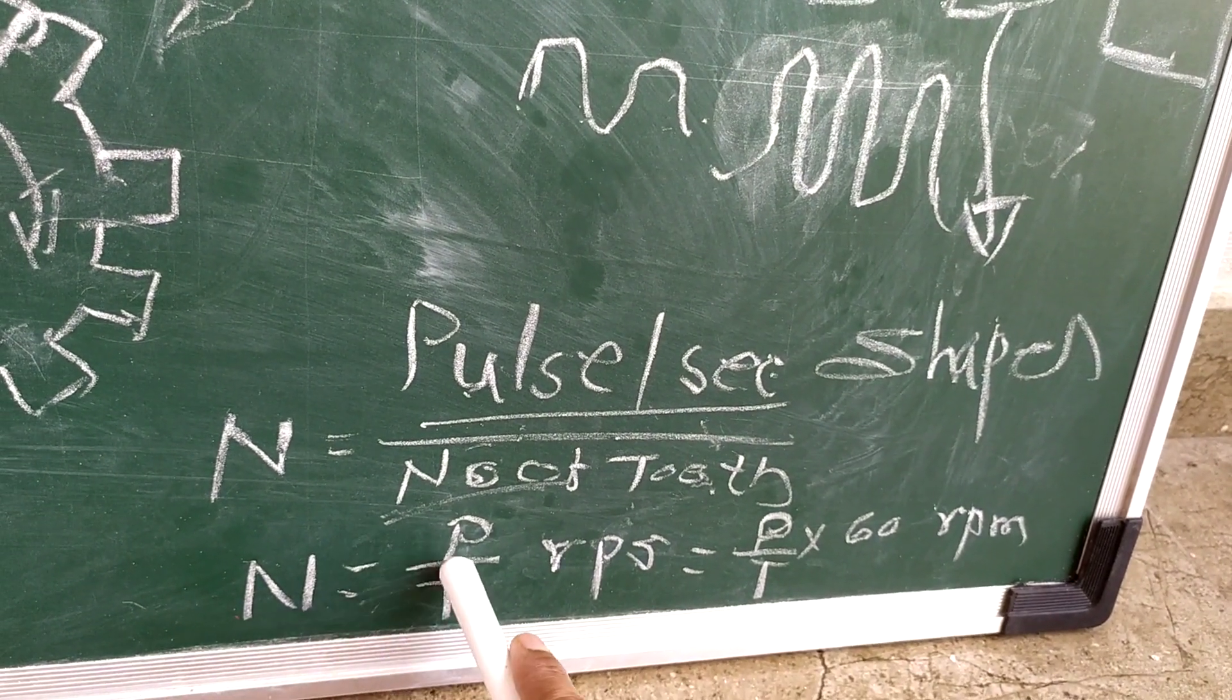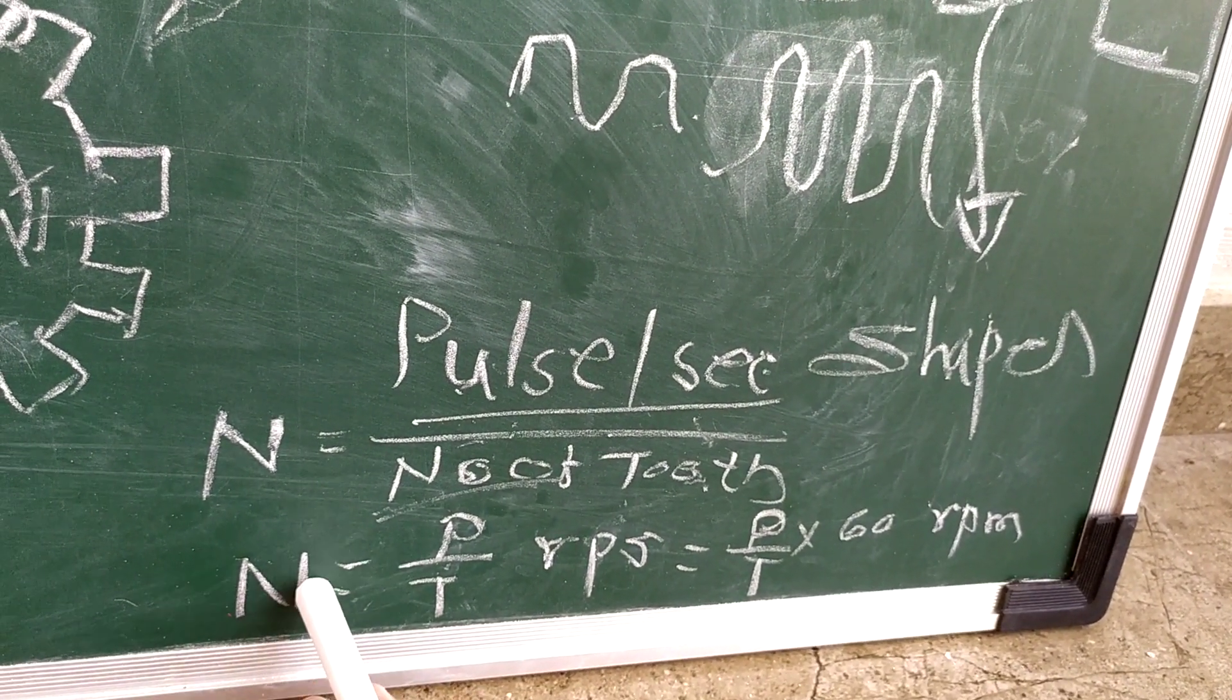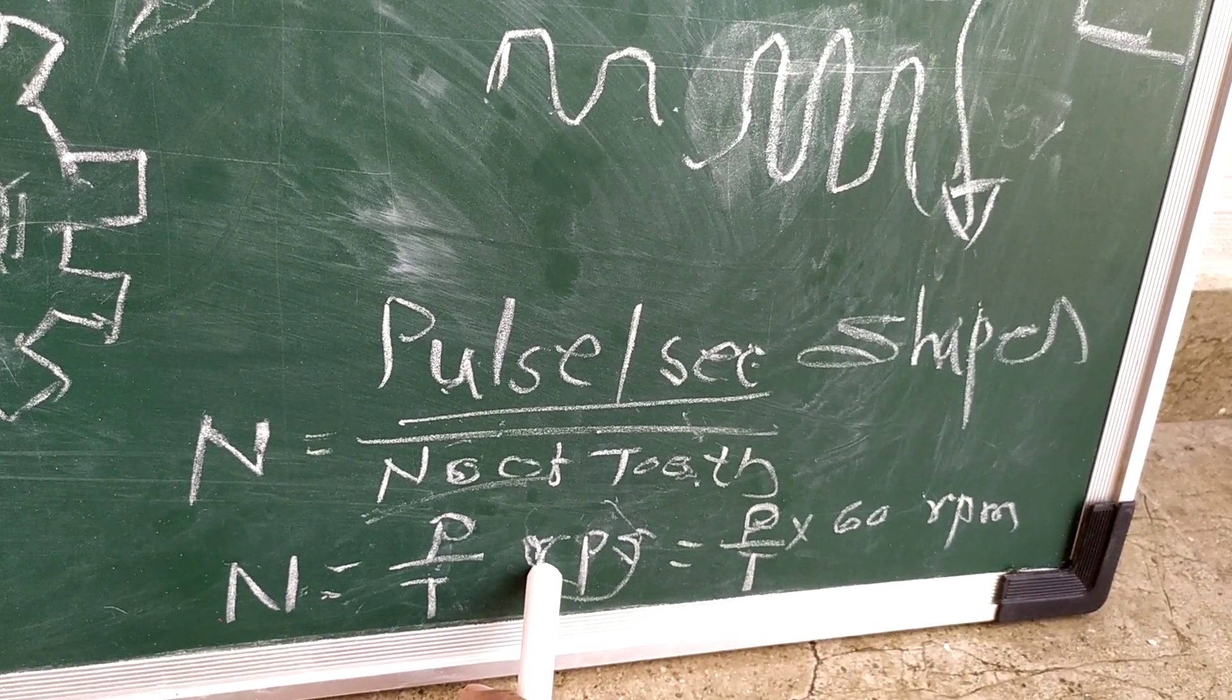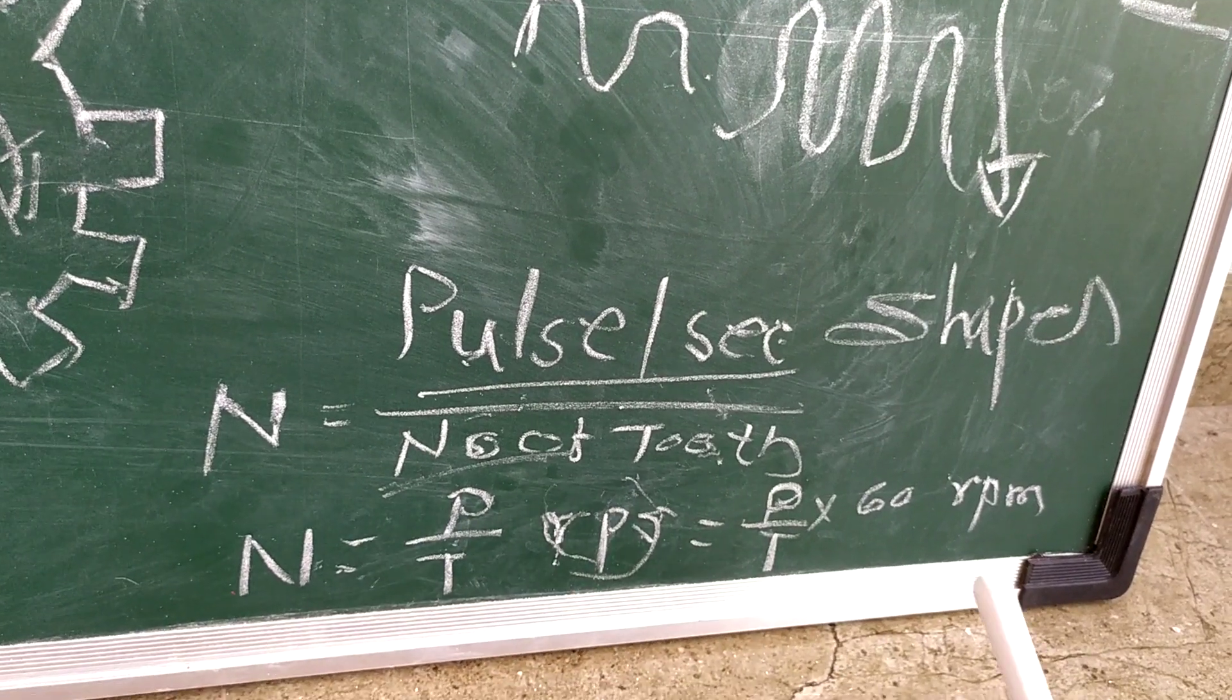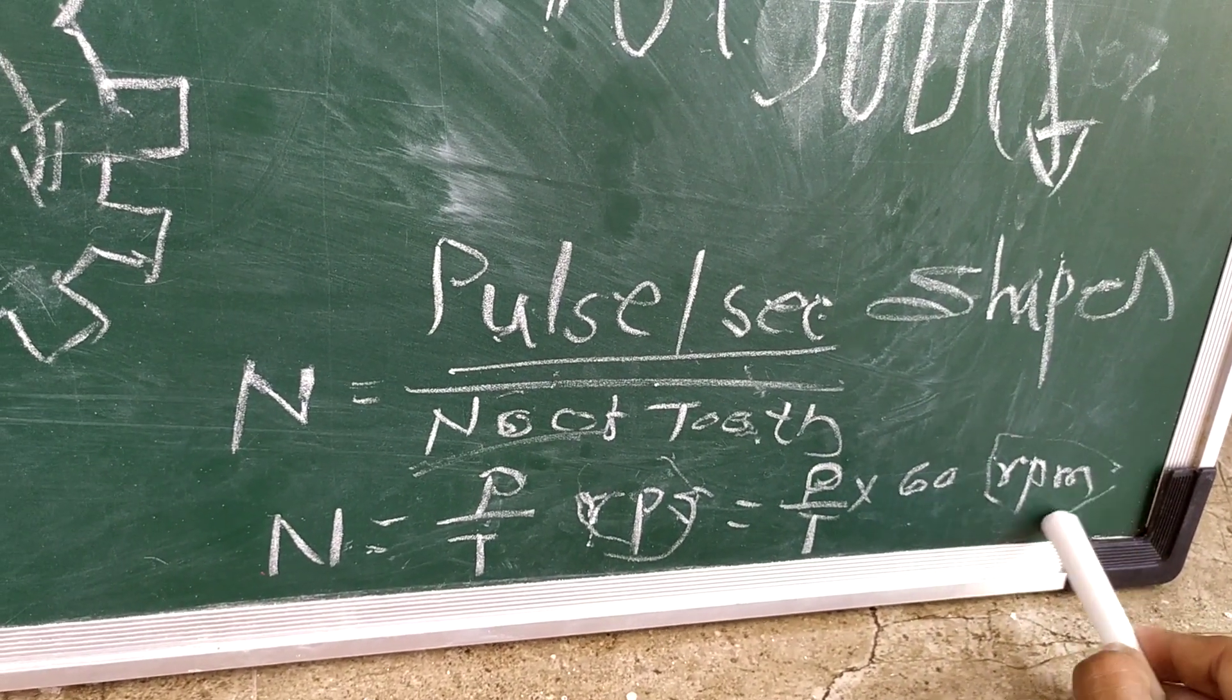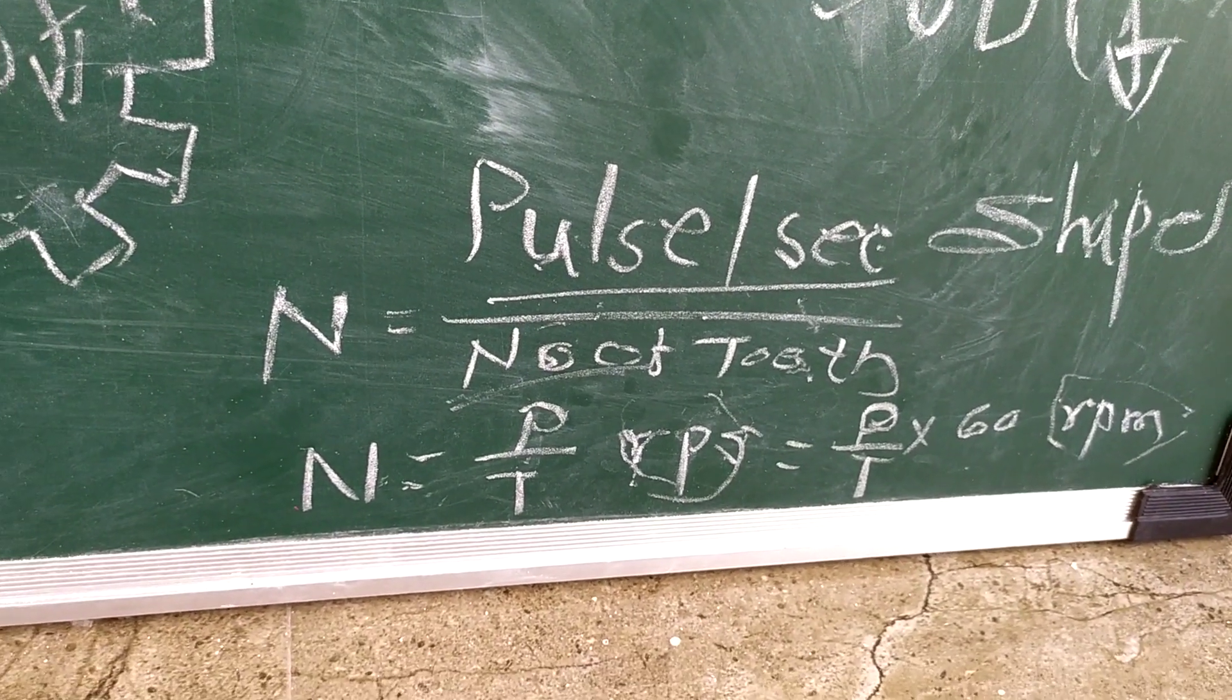To convert into revolutions per minute, multiply by 60. We will get the answer in revolutions per minute. Thank you.